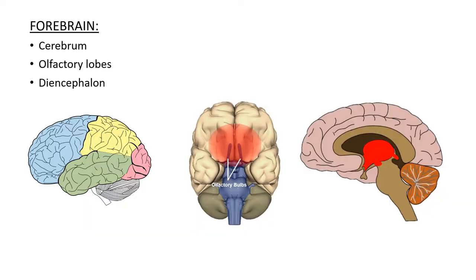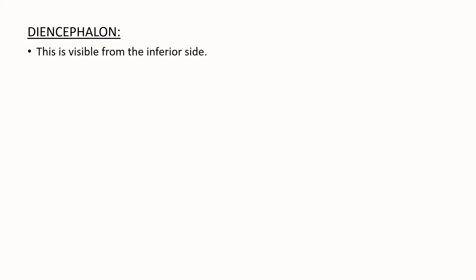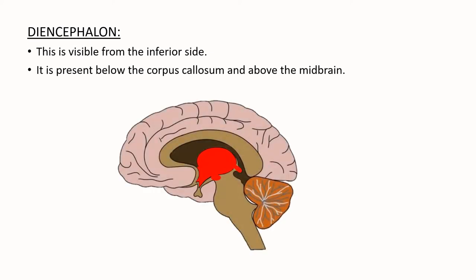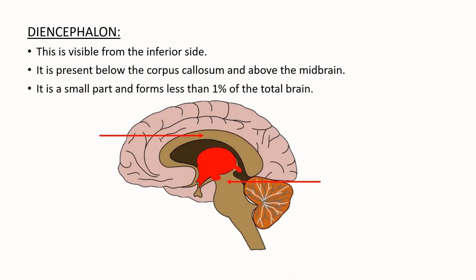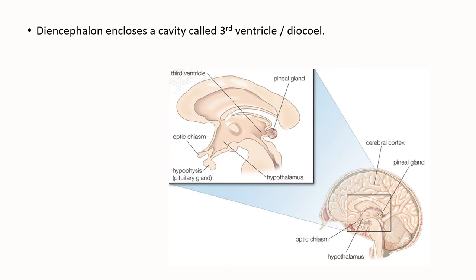The next and the last part of forebrain is the diencephalon. Diencephalon is visible from the inferior side and is present below the corpus callosum and above the midbrain. It is a small part and forms less than 1% of the total brain. The brain consists of spaces or cavities in between, and these cavities are filled with fluid.